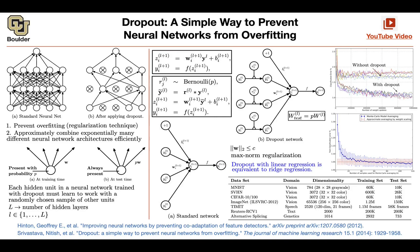I couldn't understand your question fully. So I just want to better understand the ensemble part. How do we achieve that? Exactly at what point does the resampling of the dropout happen?